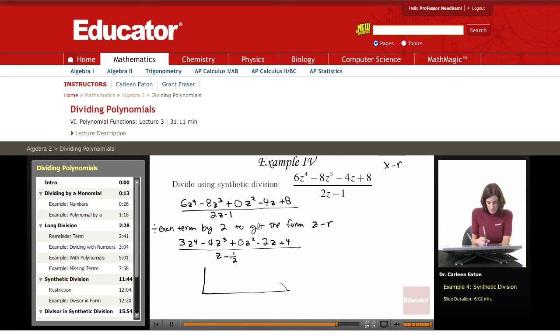Now I'm ready to set this up. I'm going to take negative 1 half, take the opposite sign and write it here. So that is 1 half. Then I'm going to put the coefficients here, my new coefficients after dividing: 3, negative 4, 0, negative 2, and 4.